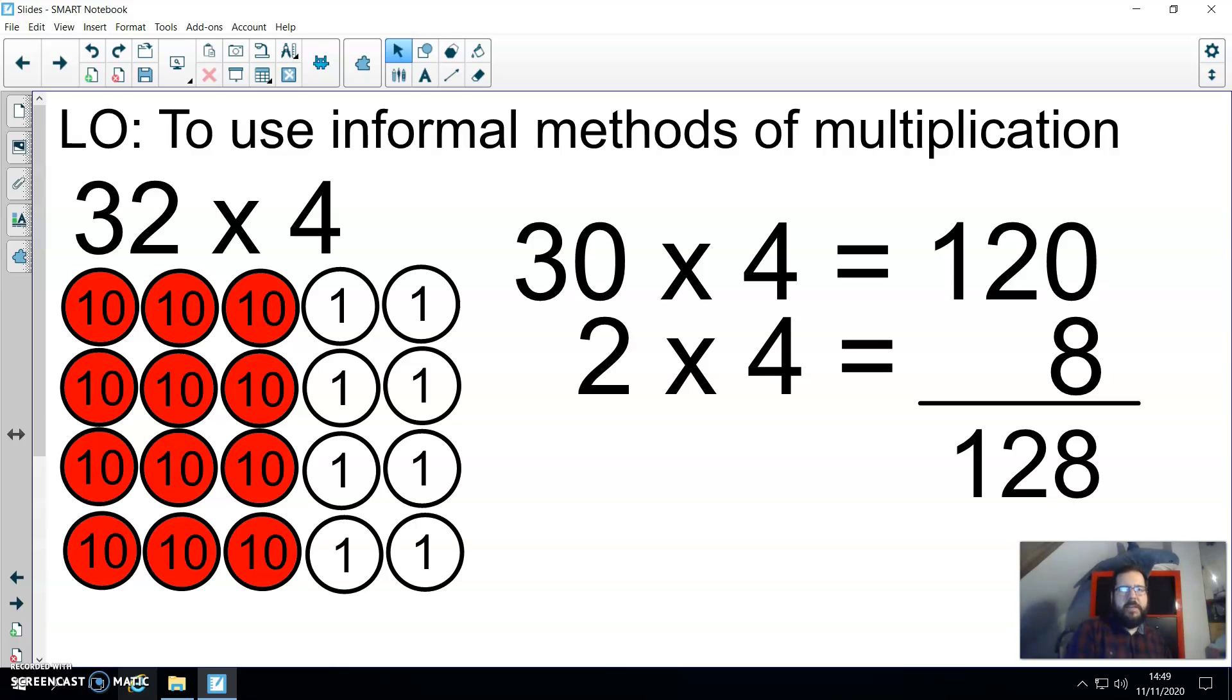To start with, I want to recap what we did with mental methods of multiplication. You can remember when we did 32 multiplied by 4, we used an array. So we partitioned 32 into three tens and two ones, as you can see on the left hand side. That's the multiplicand. And then we multiply that by 4, which is the multiplier. So there were four rows of 32. Then we added together the ones and we added together the tens to find the answer.